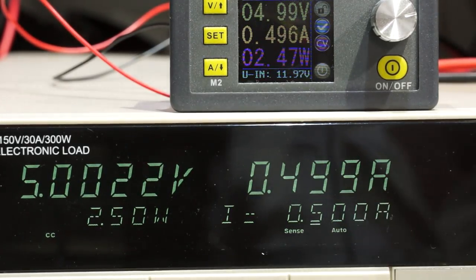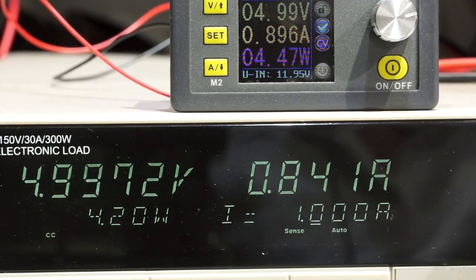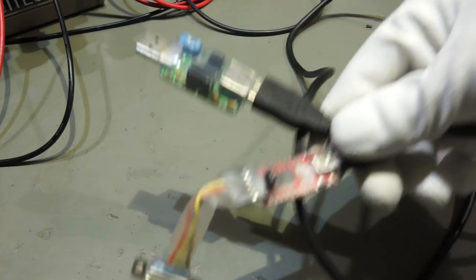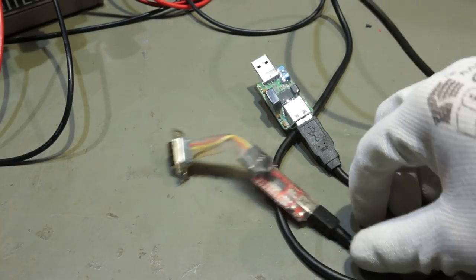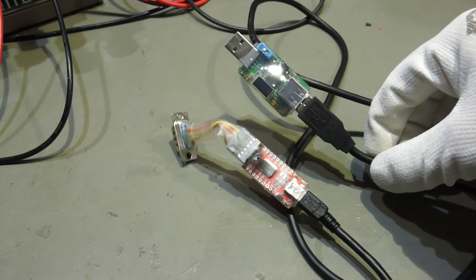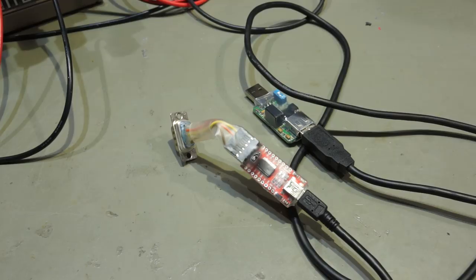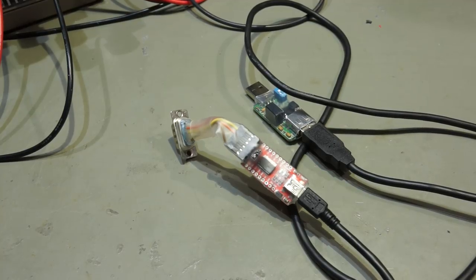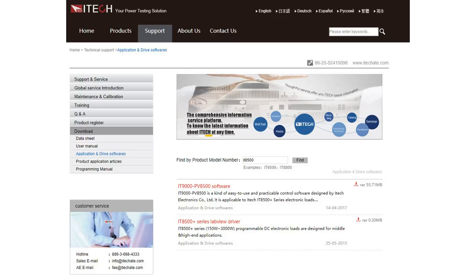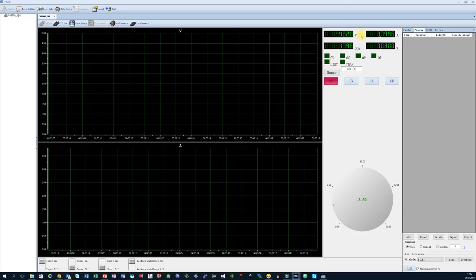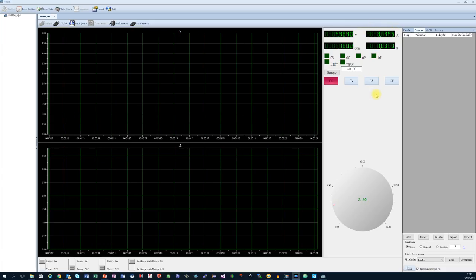I could now start the load at 0.5 ampere and then use the dial to increase the current up to 5 ampere. But I use a simpler way. I connect my load to my PC. This is done through an isolated USB to serial connection. You can buy one from the manufacturer, but you can also create your own. I will leave the details in my blog. You also find the installation process of the software on my blog. I had to contact the manufacturer to get this information. But now it works. It still is not optimal and I did not get a manual on how to use it. But at least I can use it now for my normal testing.